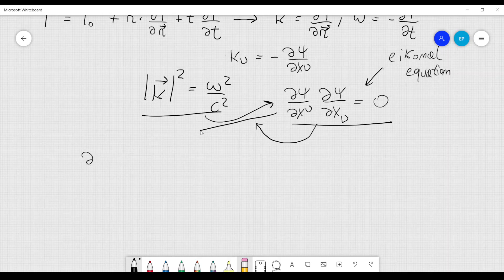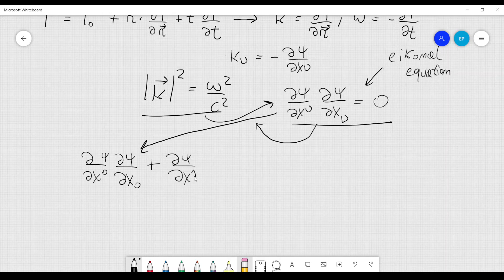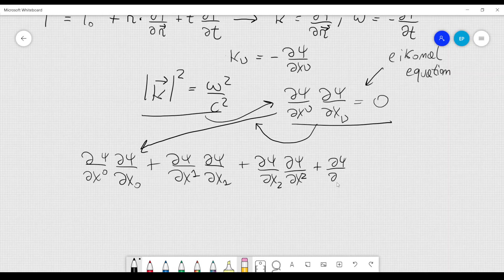Well, we know that we can rewrite this as d psi over dx 0, d psi over dx 0, d psi over dx 0, plus d psi over dx 1, d psi over dx 1, plus d psi over dx 2, d psi over dx 2, plus d psi over dx 3, d psi over dx 3, equal to 0.